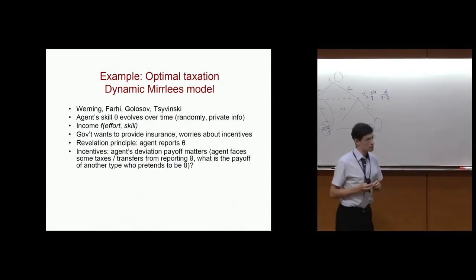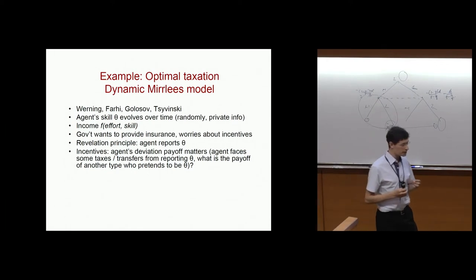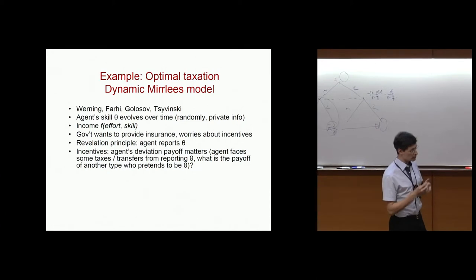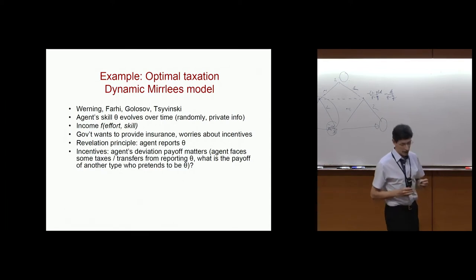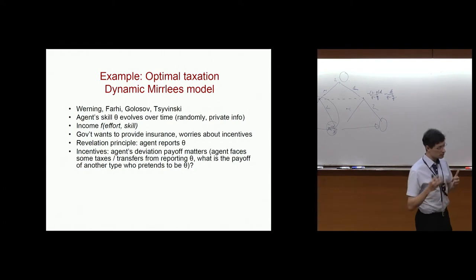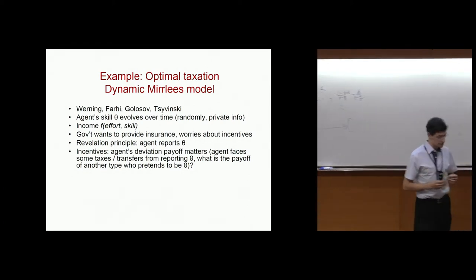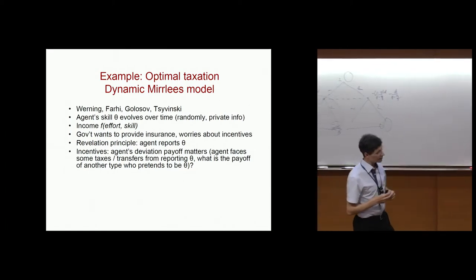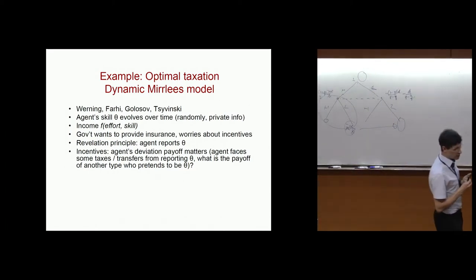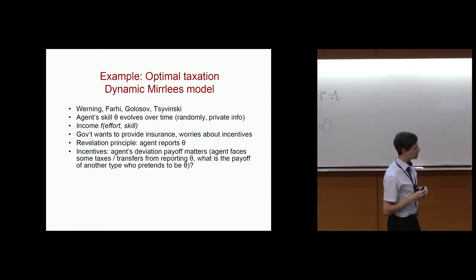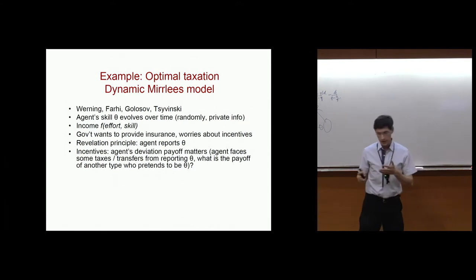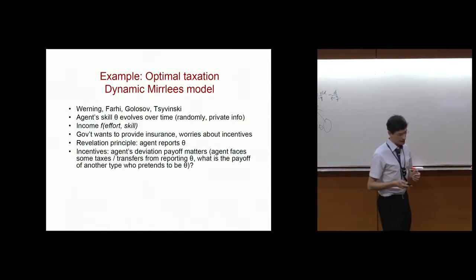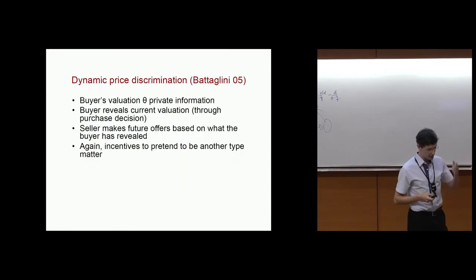To put things into perspective, one application is optimal dynamic taxation — for example, Mirrlees's model. The typical setting is that the agent has some skill which is evolving over time. Sometimes his skills are more suitable for the current economy, or it could be that he is unlucky and technology has changed and his skills are less relevant. The agent has private information about his skills, and the question is how can the government redistribute, if it wants to, and how to take care of incentives — to redistribute but still maintain incentives.